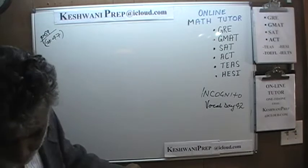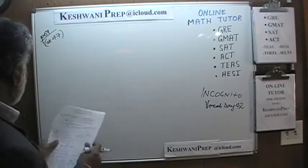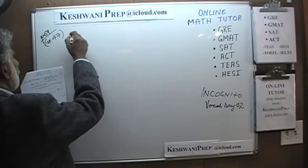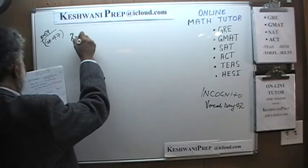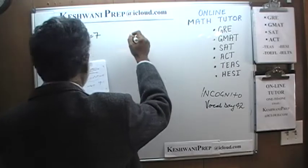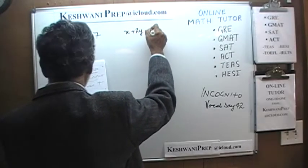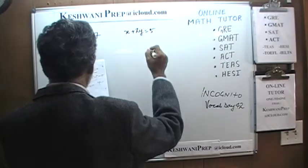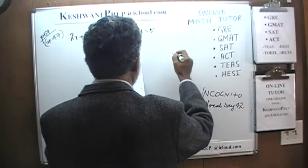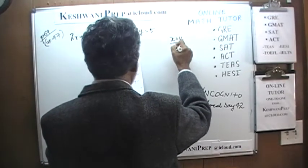Problem number 47 on page number 69. Number 47 says that we have two equations: 2x plus y equals 7, and x plus 2y equals 5. And the question simply is: how much is x plus y divided by 3?